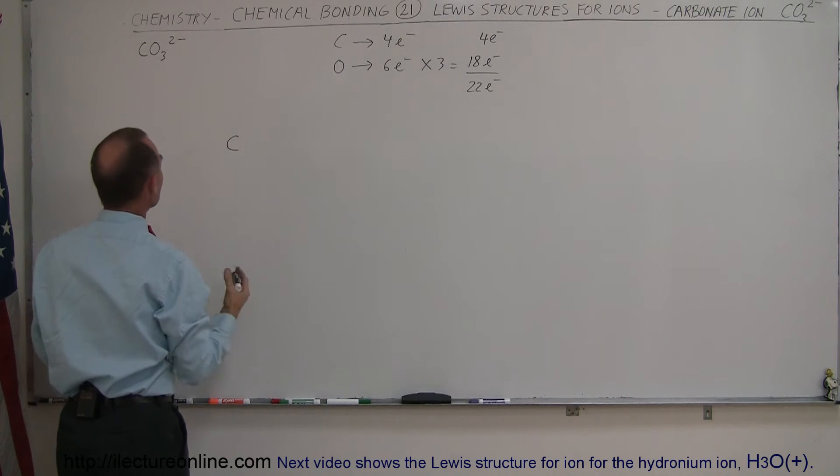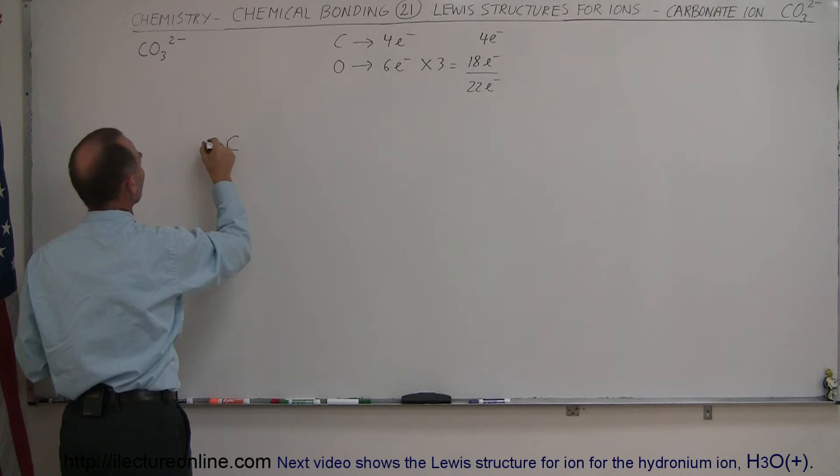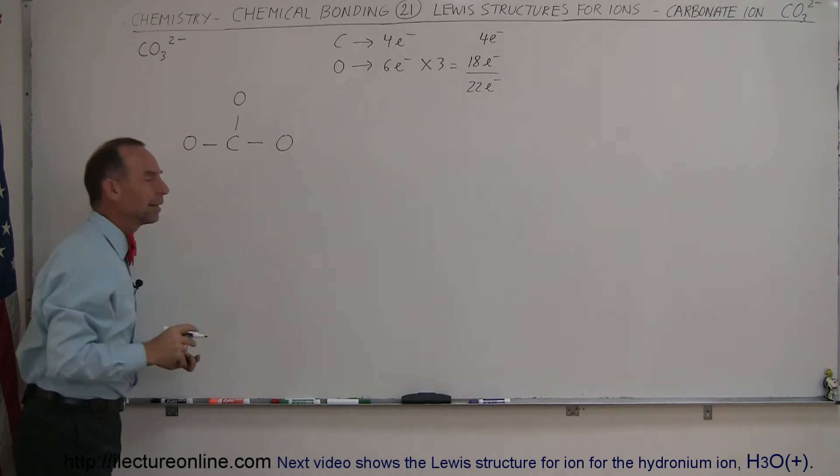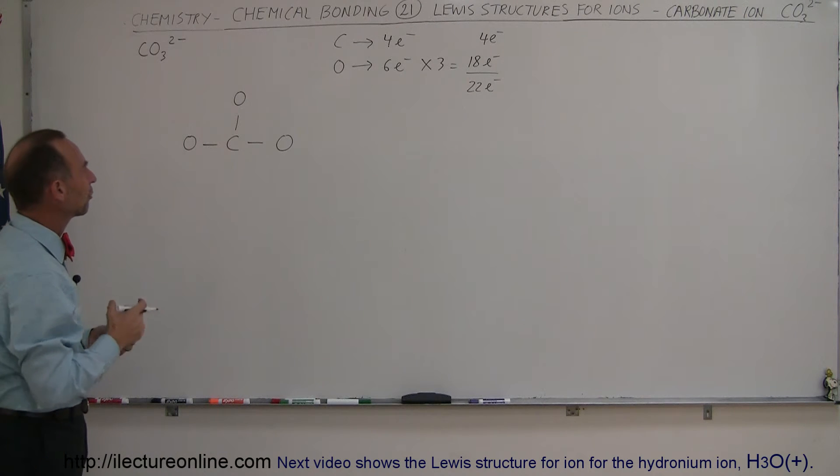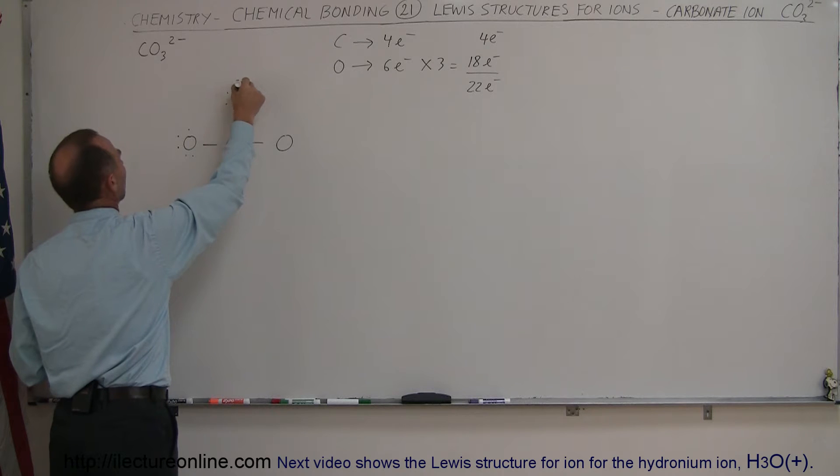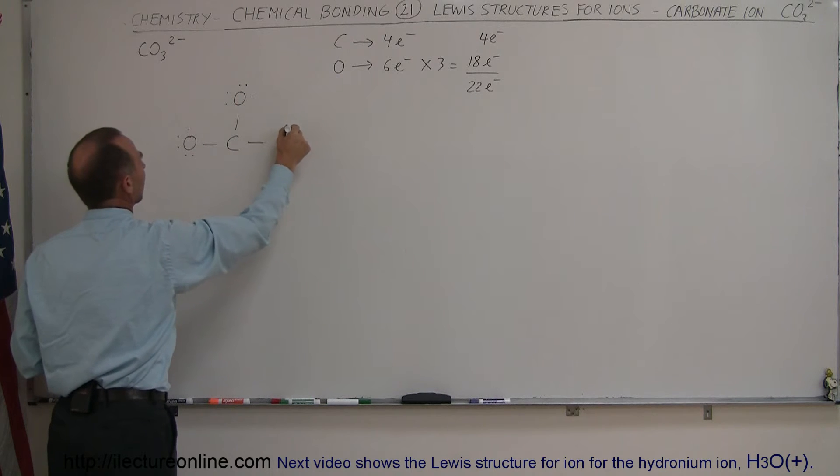And then we have three oxygens, so let's start off with forming a single bond with each of the oxygens, like so. And if we do that, let's draw the electrons, the free electrons around it. And so that would mean that we would need, oh, let's say it was only five electrons here, and five electrons there, and five electrons there.